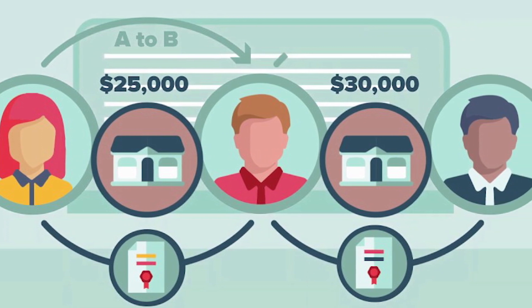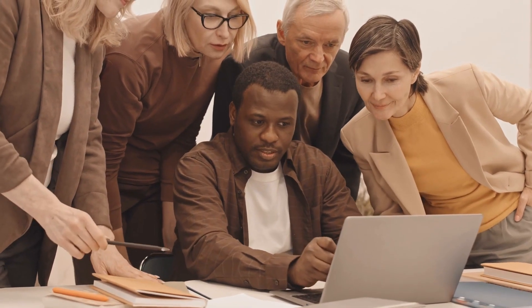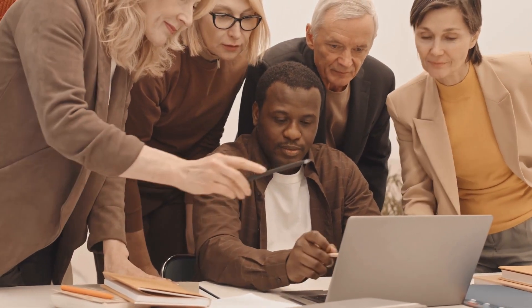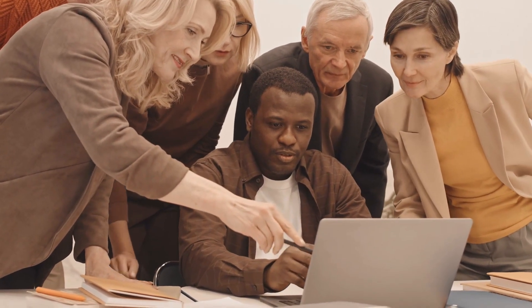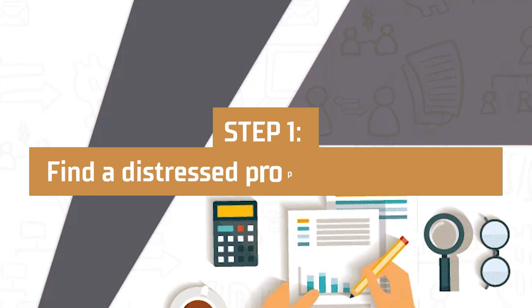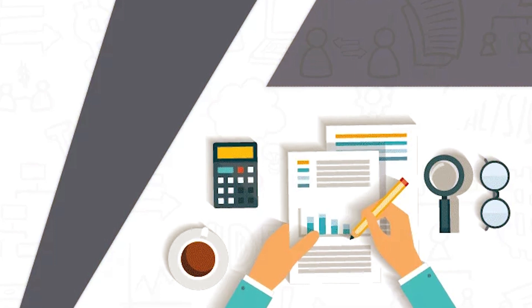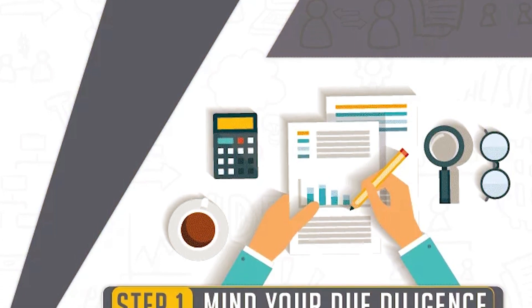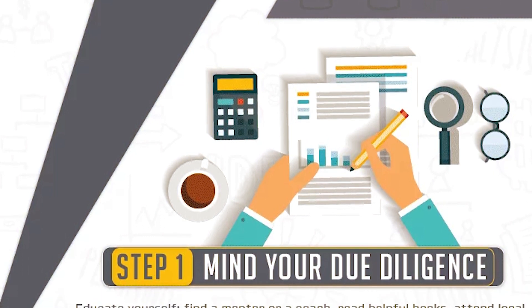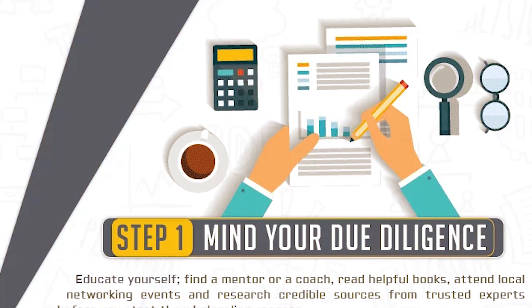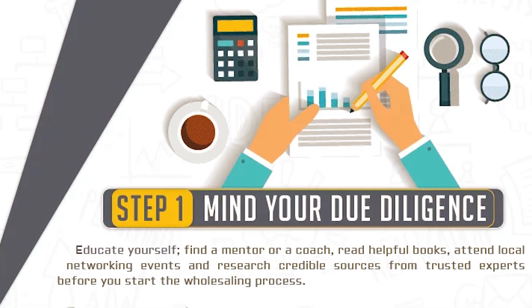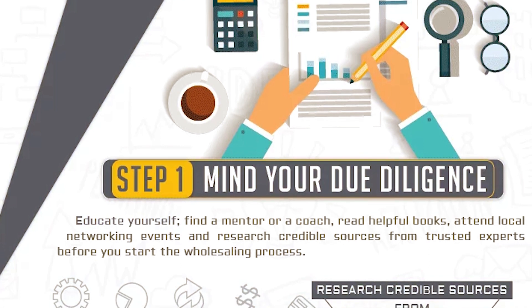Now that you understand the different benefits of becoming a wholesaler, how does the wholesaling process work, and what kind of skills and resources are required to successfully complete your first deal? Here are the seven steps of how to wholesale real estate. The first step is to find a distressed property to wholesale. You can find distressed properties and make more profit by buying below market price. When you find a distressed property that has been abandoned or has a motivated seller, it will allow you to make a higher profit.